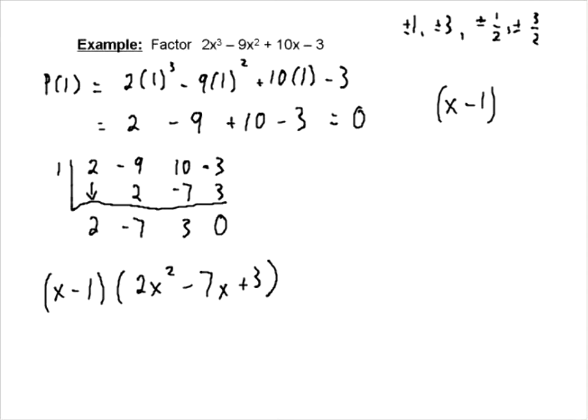Now we've got to factor this quadratic. Now, remember we could do decomposition here. And there's nothing wrong with doing decomposition. But if we can find two numbers that multiply to 6, 2 times 3, and add to negative 7, we know it can be factored.